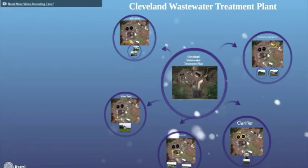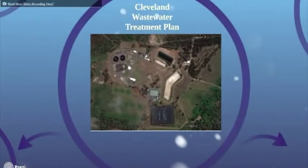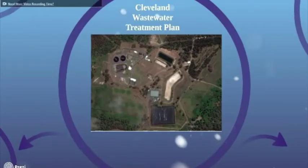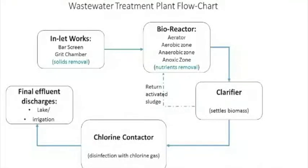Let's have a look at the plant location map. The plant treatment process has five main steps.